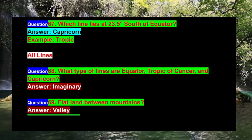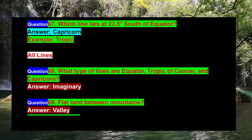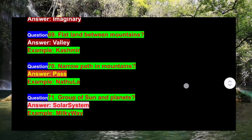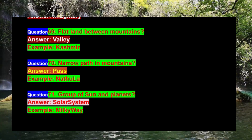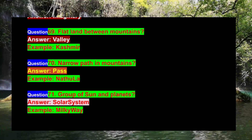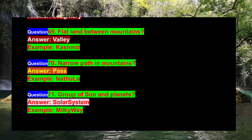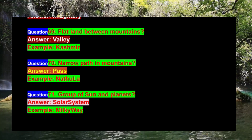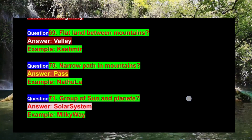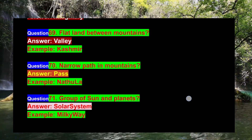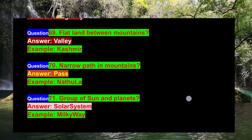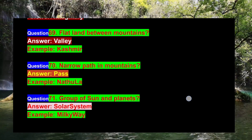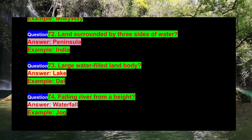Question 68: What type of lines are the Equator, Tropic of Cancer, and Tropic of Capricorn? Answer: Imaginary. Question 69: Flat land between mountains? Answer: Valley. Example: Kashmir. Question 70: Narrow path in mountains? Answer: Pass. Example: Nathula. Question 71: Group of Sun and planets? Answer: Solar System. Example: Milky Way.